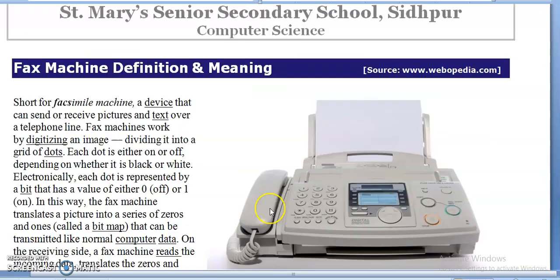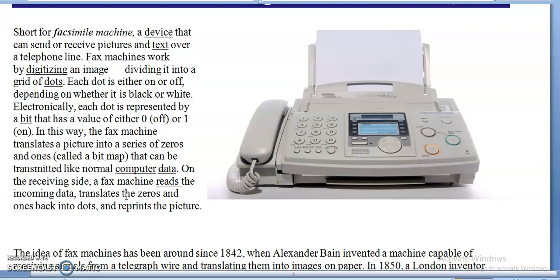Next is the fax machine. The short form 'fax' stands for facsimile — a machine or device that can send or receive pictures and text over a telephone line. Fax machines work by digitizing an image and dividing it into a grid of dots. Each dot is either on or off depending on whether it is black or white. Electronically, each dot is represented by one bit with a value of either zero or one — these are called bitmaps.